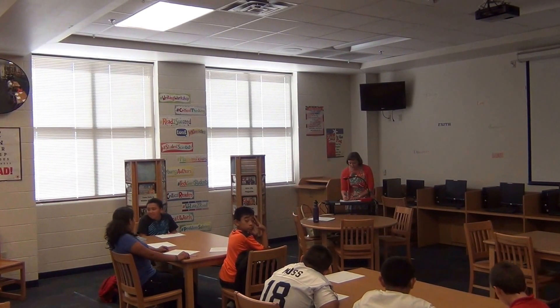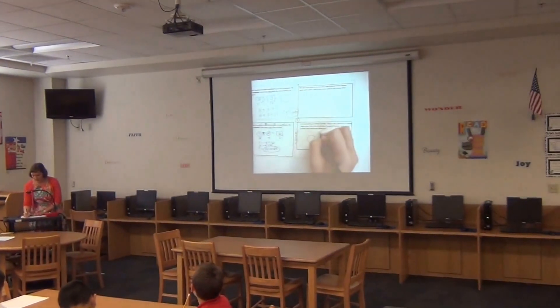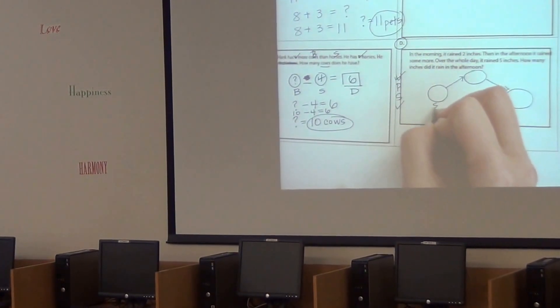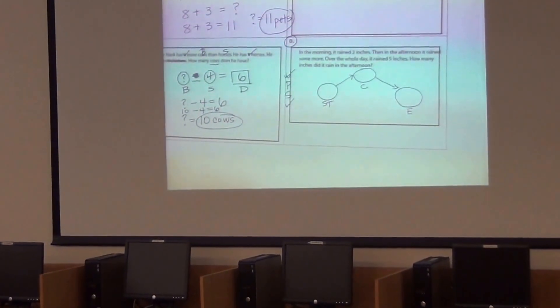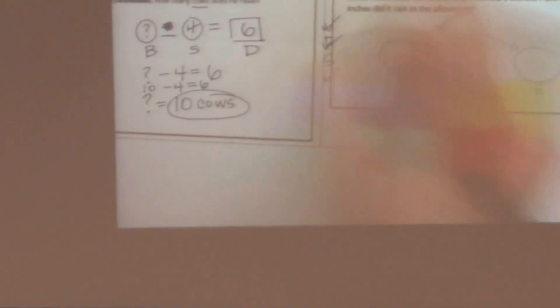I'm going to go ahead and draw my change picture to help me organize this word problem information: circle, arrow, circle, arrow, circle. And I'll go ahead and label my circles just to help remember what goes in each box. We've done our planning. We know this is a change problem.